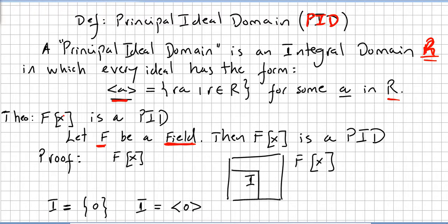After this definition of principal ideal domain, we get directly into the theorem: the ring of polynomials over a field is a principal ideal domain. So let F be a field; then F[x], the ring of polynomials, is a principal ideal domain. We are going to get directly into the proof for this.